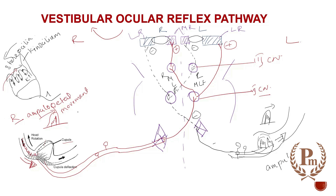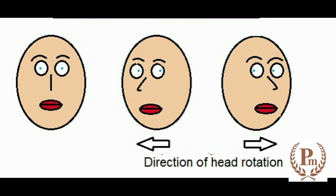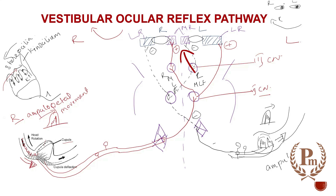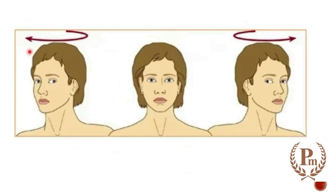The normal response of the vestibulo-ocular reflex: when the head moves to the right, the eye movement should be conjugate movement onto the opposite side. The medial rectus of the right eye causes the right eye to rotate medially. The medial rectus of the left eye is inhibited but the lateral rectus is stimulated. If you were fixing your gaze and move your head to the right, the eyes move to the left — this is the normal vestibulo-ocular reflex response.